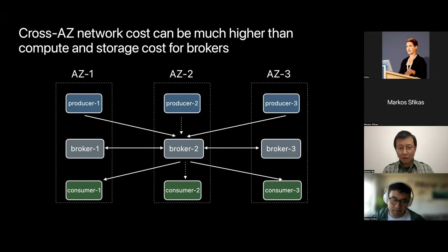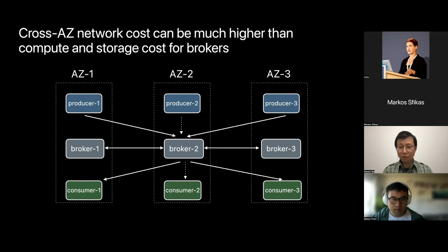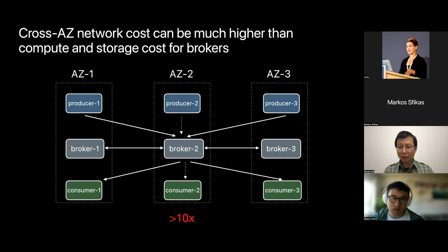For availability and durability reasons, Kafka typically places brokers on different availability zones, which can incur significant cross-AZ network costs. It could be replication among brokers, producer to broker, or broker to consumer — they all incur network costs. Based on a back-of-the-envelope calculation using public pricing from a major cloud provider, the cost of cross-AZ network traffic for a Kafka cluster can be over 10 times more than the storage and compute cost of the broker.